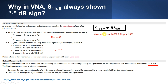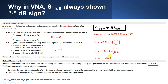Assuming V_incident equals 100 and V_reflected equals 10%, then S11 equals 20·log(V_reflected / V_incident) - it's 20·log because it's a voltage ratio. Substituting 10 and 100, we get negative 20 dB.